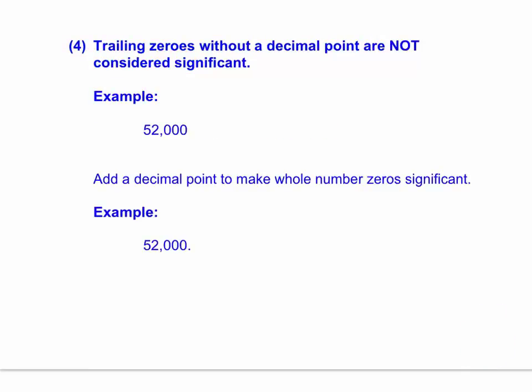Rule number four: any trailing zeros without a decimal point are considered not significant. These zeros are placeholders. You see, with the presence of these zeros here, this number is fifty-two thousand. If we take those zeros away, it becomes fifty-two. They are placeholders. These three zeros are here to show magnitude. No more, no less. Only magnitude.